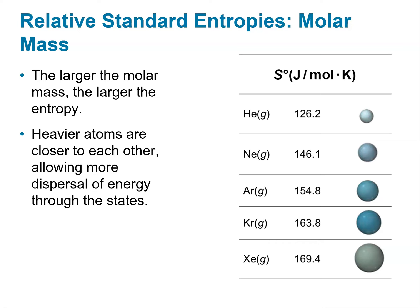Likewise, molar mass plays a role in the level of entropy. In general, the larger the molar mass, the larger the entropy, because heavier atoms are closer to each other, allowing for dispersal of energy through these states when everything else is held equal. Comparing helium to neon to argon to krypton to xenon, you see the joules per mole Kelvin of relative standard entropy increases as molar mass increases.